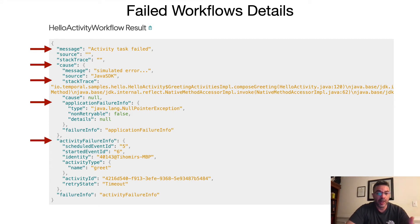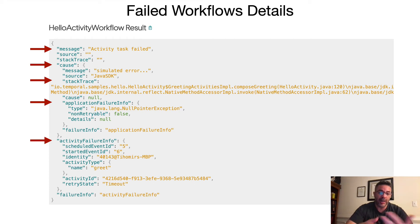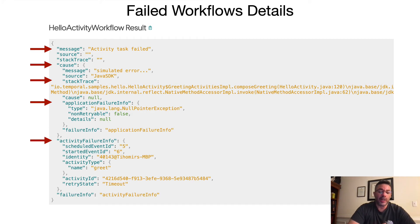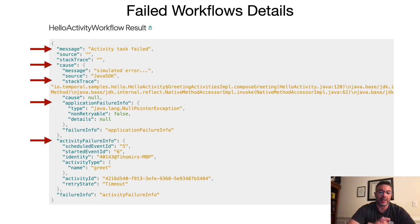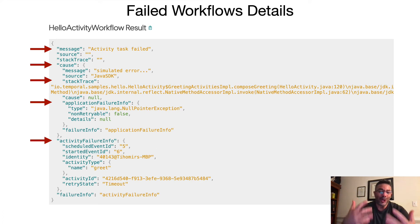We also have activity failure information, which gives us a lot of detail about the activity that caused the failure of the workflow execution. We can see even the event IDs, the identity of the worker that attempted to execute this activity, the activity type, the activity ID which we can correlate in our workflow history, and the retry state — which tells us that we retried this activity due to timeouts. Temporal gives you a lot of this information out of the box.